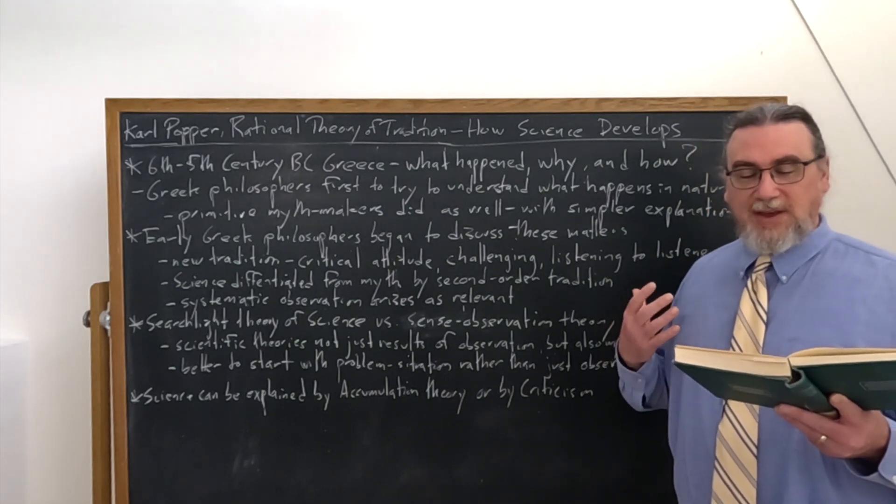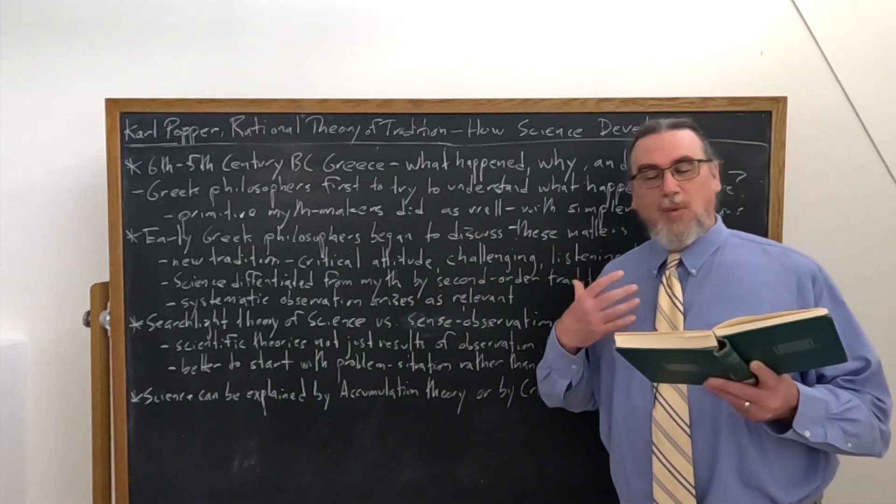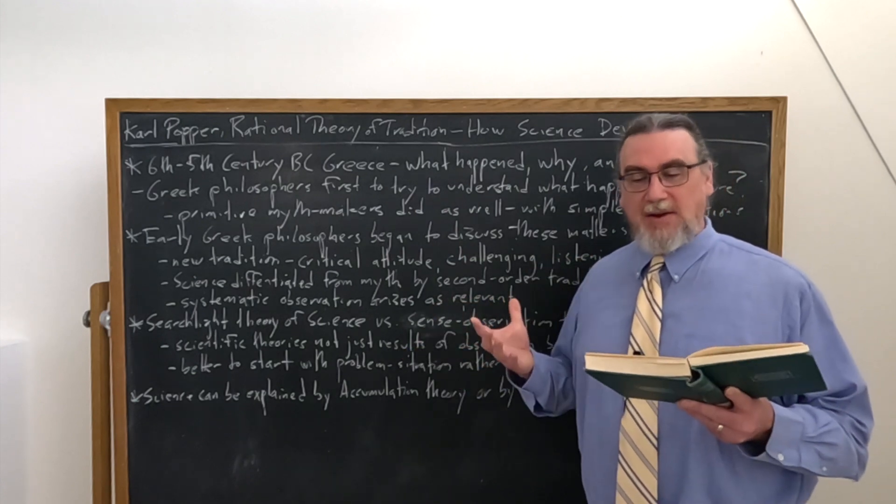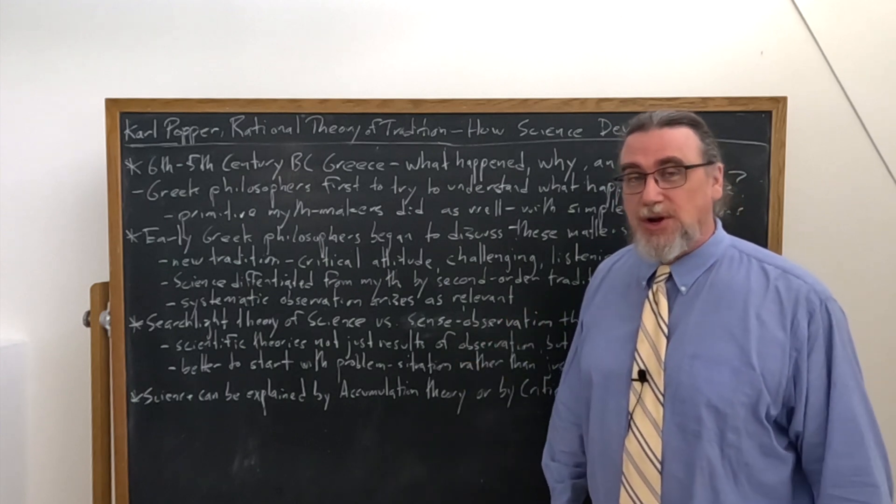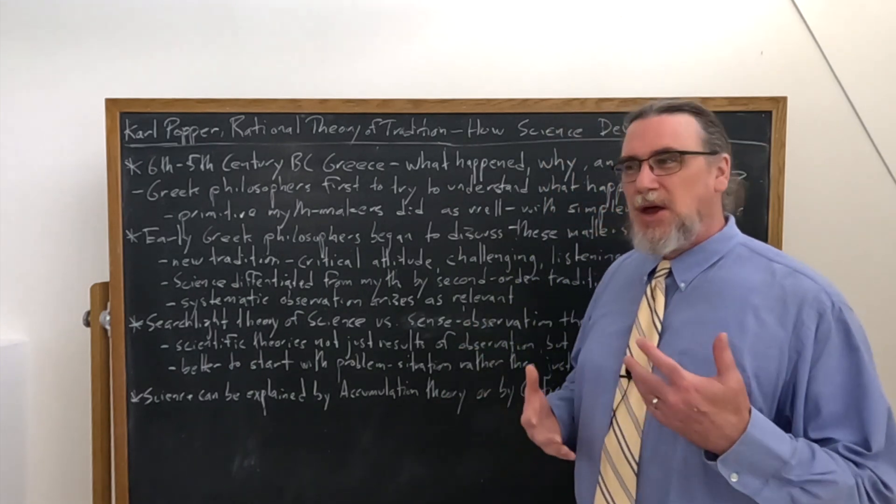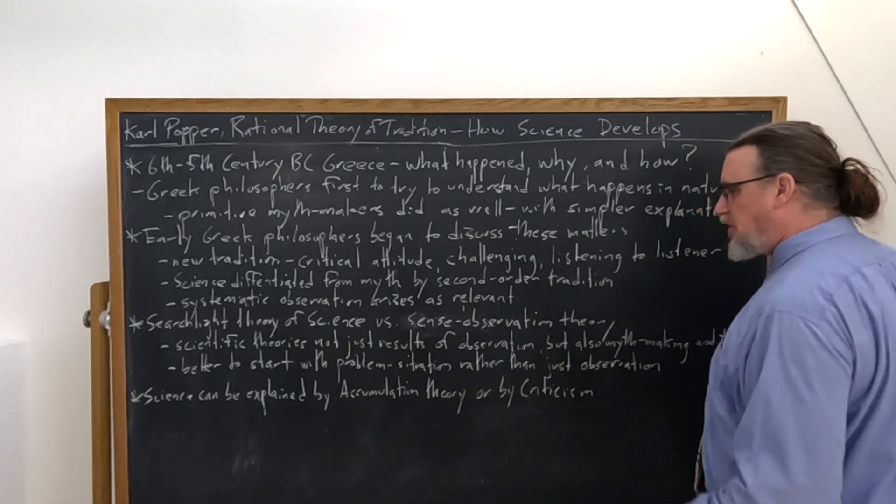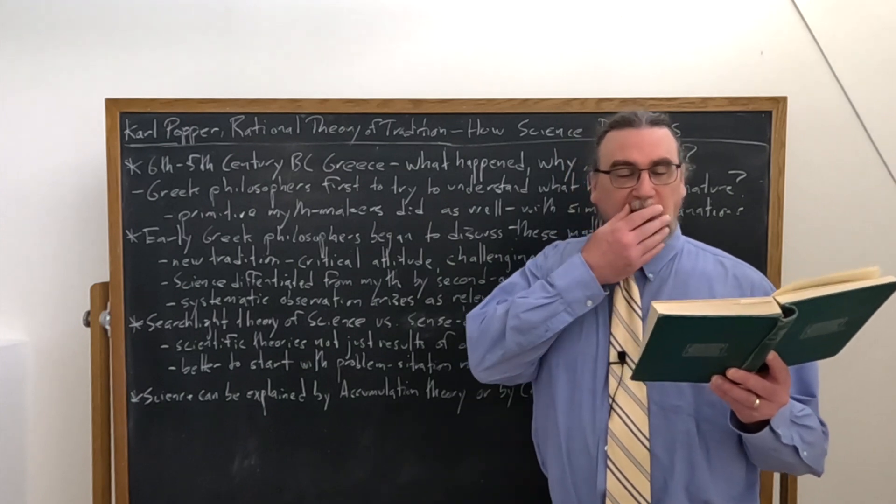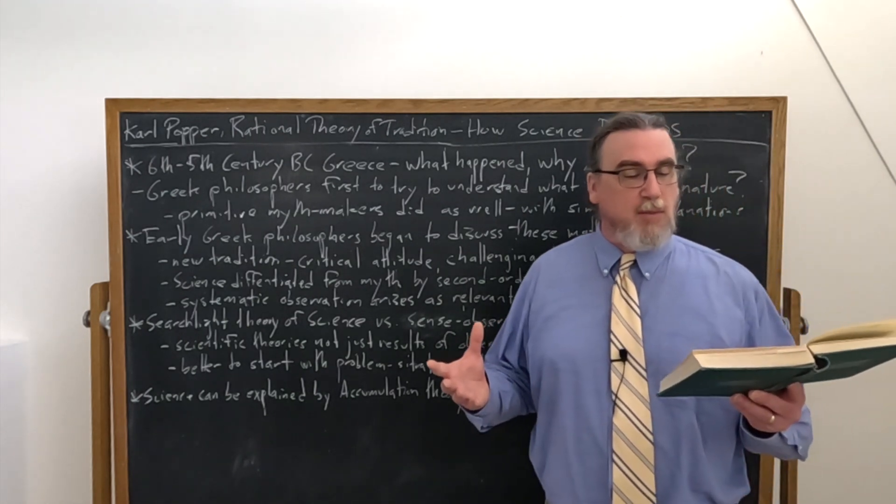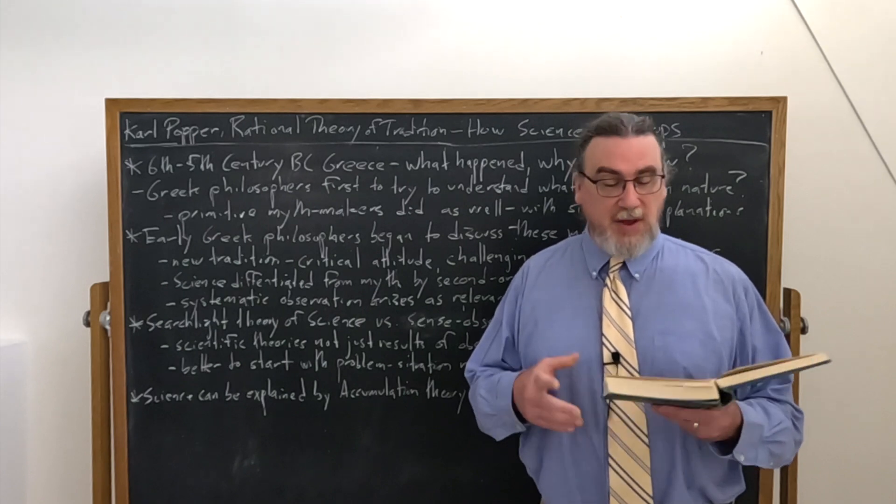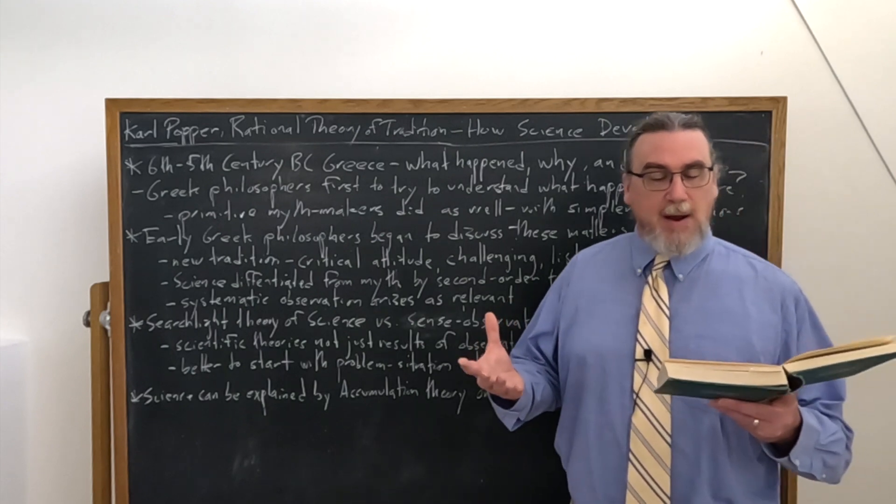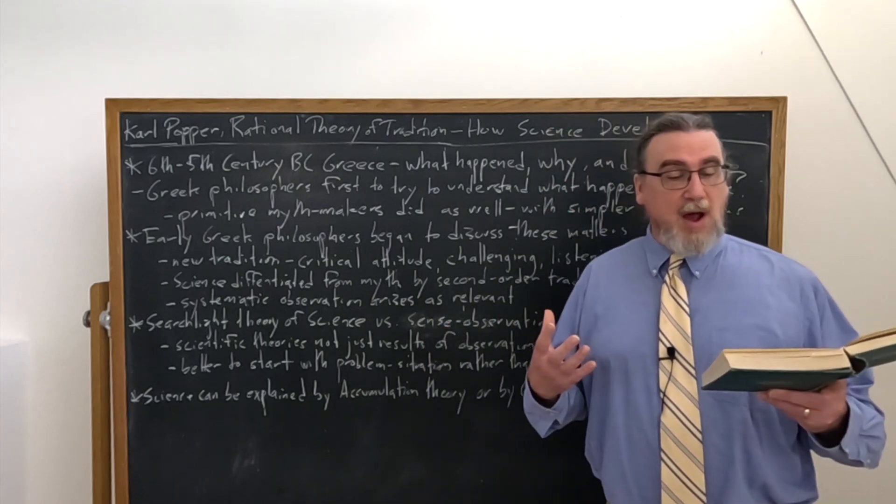So why is this the case? Well, because we don't actually start completely new. We inherit and we work within scientific traditions, which can undergo considerable revolutions as well. So this leads him to talking about how do we actually explain science? And he brings up two other theories here, accumulation theory or criticism. It's necessary for us to see that of the two main ways in which we may explain the growth of science, one is rather unimportant and the other is important. The first explains science as an accumulation of knowledge, like a growing library or a museum as more and more books accumulate.